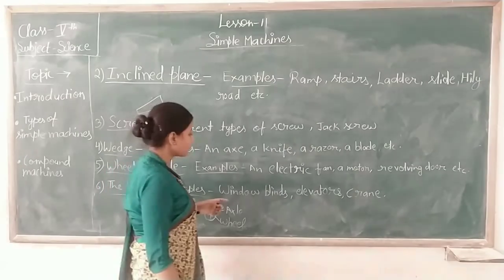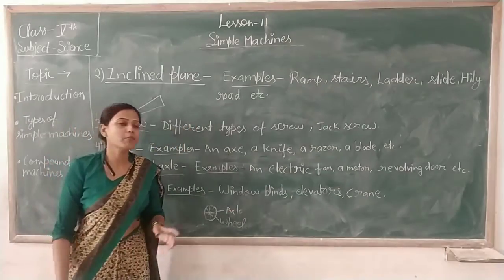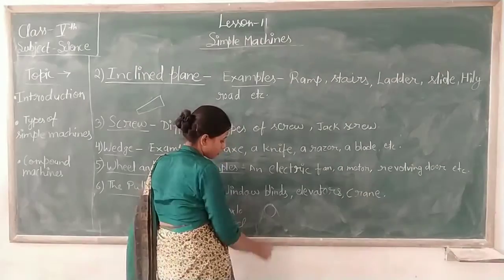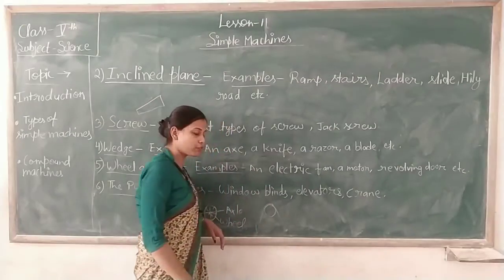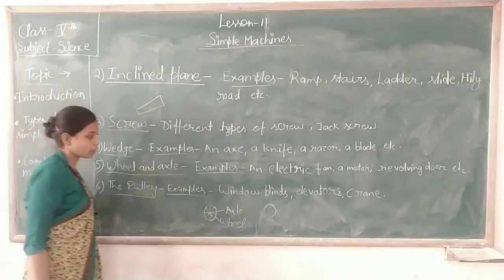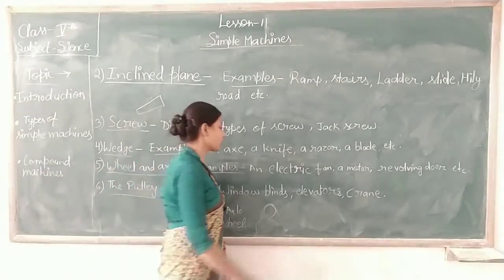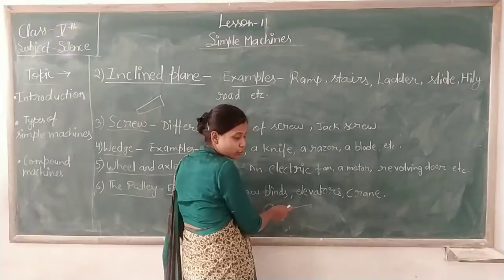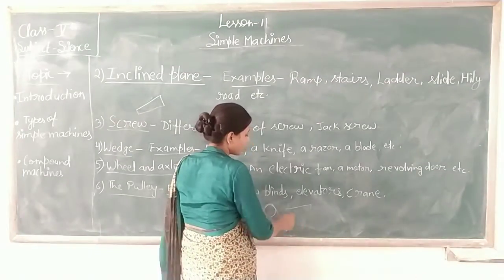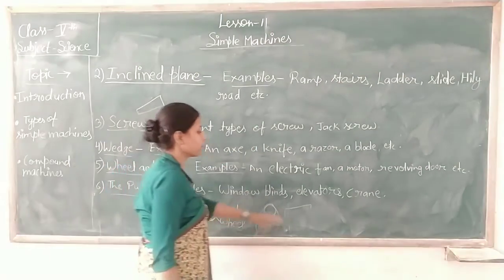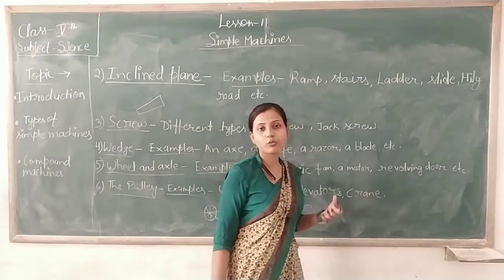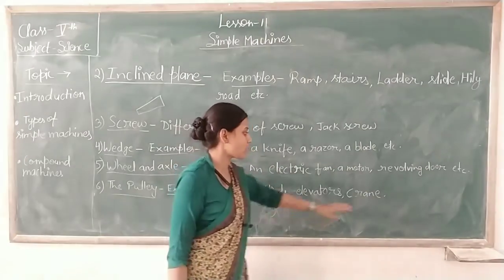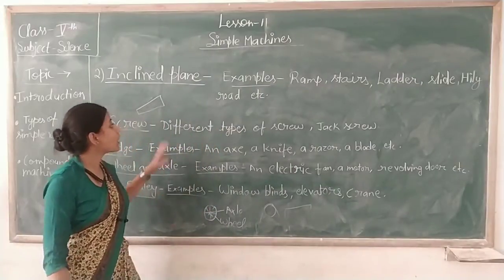Next is the pulley. The pulley has a wheel and a rope. When you pull this in a downward direction motion, it creates an upward motion for the load. Example: window blind. Crane se bhi saman ek jagah se utha kar dusri jagah pahunchaya jata hai.